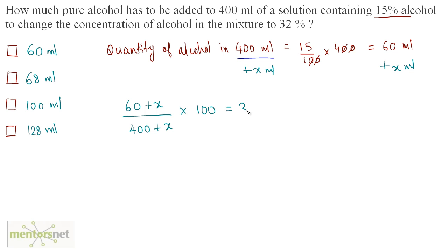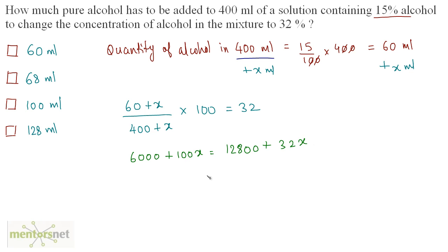If I take the percentage, I should get 32%. Multiplying through by 100: 6000 + 100x = 400 × 32. Now, 32 × 4 = 128, and with the two zeros that gives 12800 + 32x. So, 100x − 32x = 12800 − 6000, which means 68x = 6800.